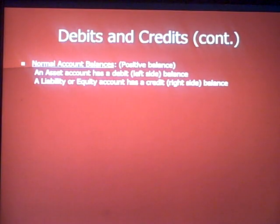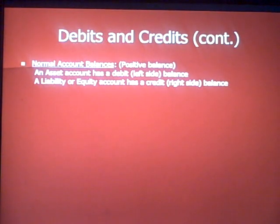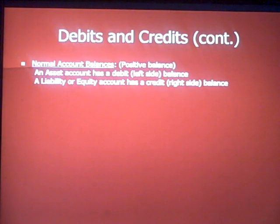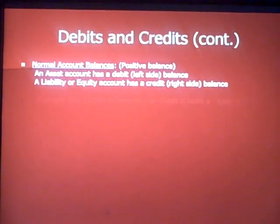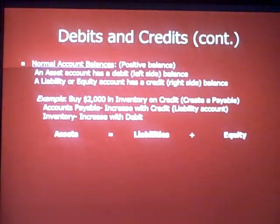Another term: normal account balance. When you look at financial statements, it's assumed that the balance is positive, which is considered normal. An asset account normally has a debit — left side — balance; cash, for example, has a debit balance. A liability or equity account normally has a credit — right side — balance; accounts payable, for example, would normally have a credit balance.